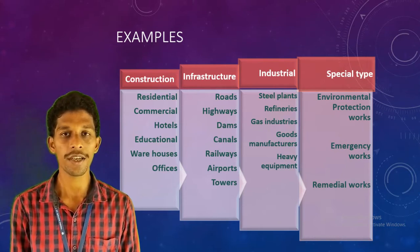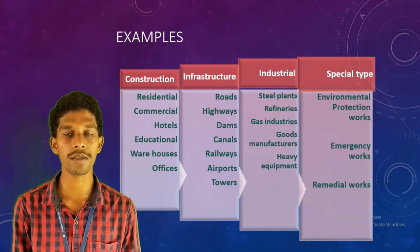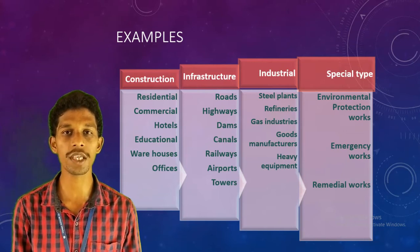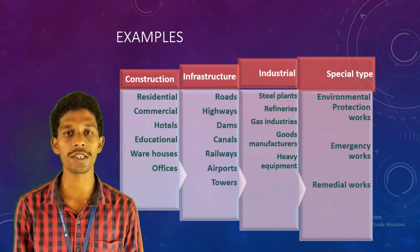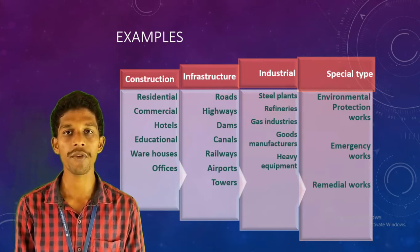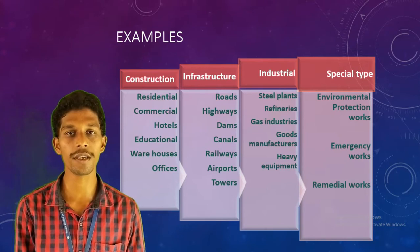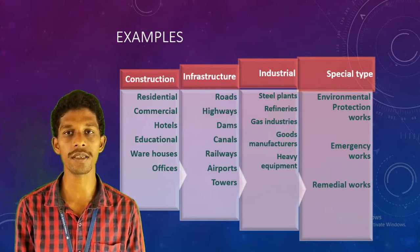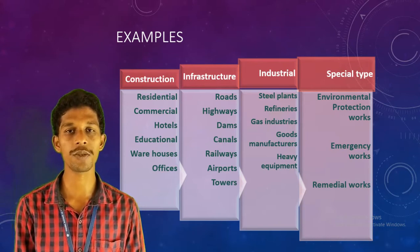The third classification is industrial projects. Industrial projects are nothing but refineries, gas hubs, manufacturing industries — all the industrial sector buildings and companies are included in this sector. The fourth one is special types of construction, which includes environmental protection works wherever the necessity is there, along with emergency works, shelters wherever floods occur — all these special works are included in this classification.